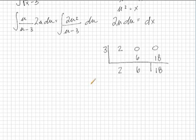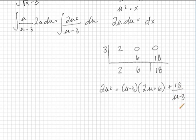So that's what we end up with when we divide u minus 3 out of the numerator, which means that 2u squared is equal to u minus 3 times 2u plus 6 plus 18 over u minus 3.